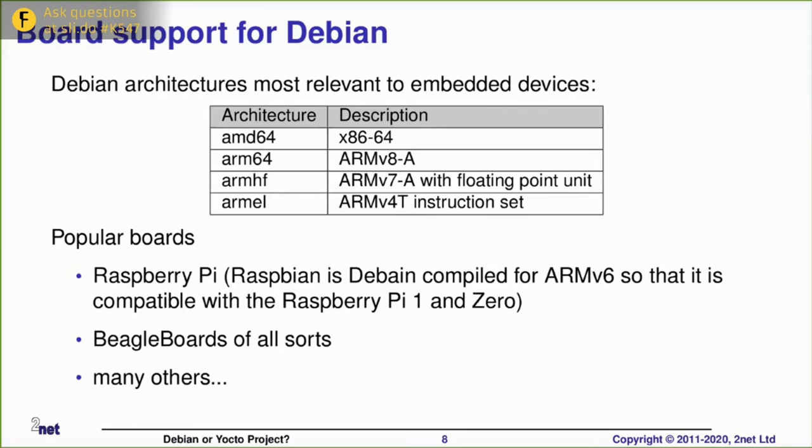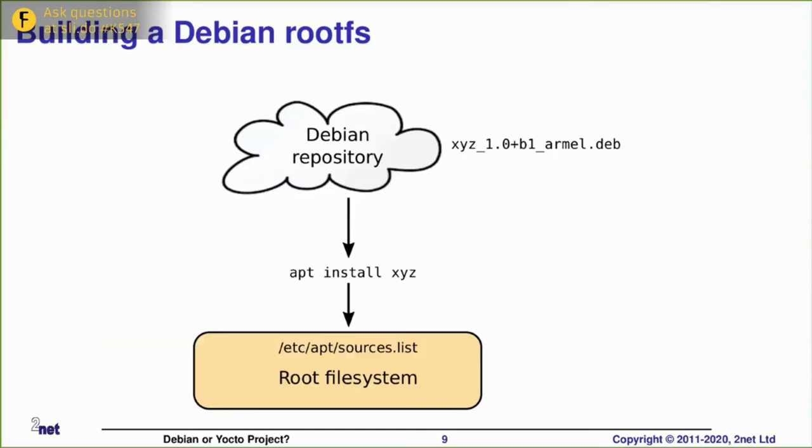You'll find Debian as an option on a lot of dev boards. The most obvious would be Raspberry Pi. Raspberry Pi has its own Debian distribution called Raspbian, which is actually compiled for the Arm v6 instruction set. If you're using Beagle boards, they all come with a Debian distro as an option. And the same applies to many other dev boards.